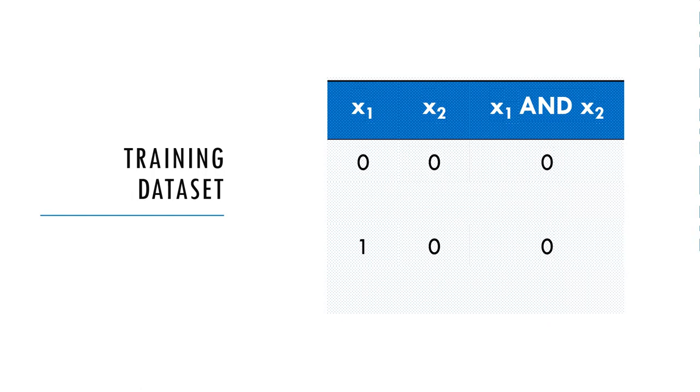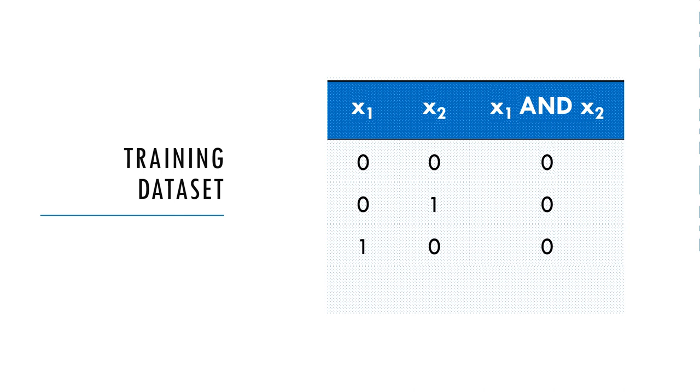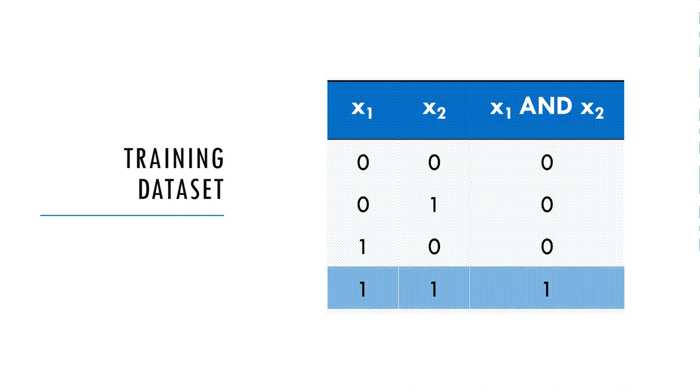To explain the MCP neuron, let us consider a training dataset with two features x1 and x2. The objective is to solve a binary classification problem where the classes are defined using the logic of the AND gate. That is, if the values of the features are 0 and 1, the output should be predicted as class 0, while an input of 1 and 1 should predict 1.